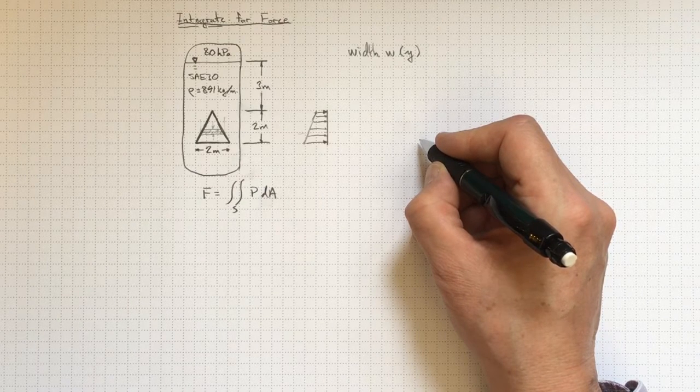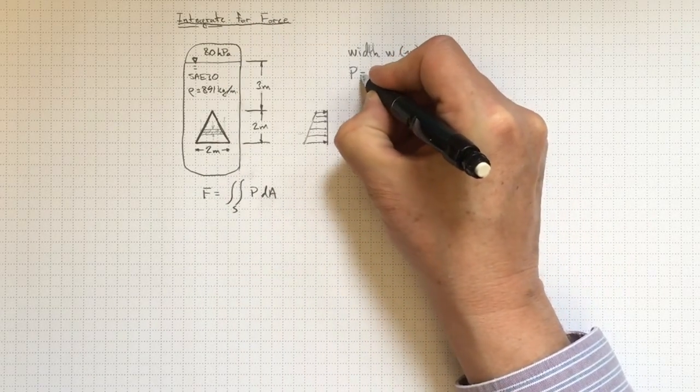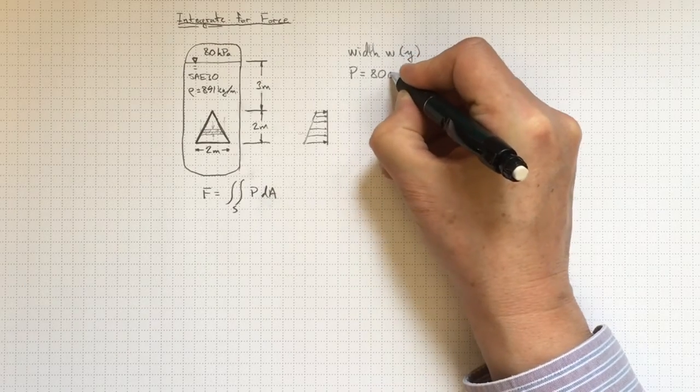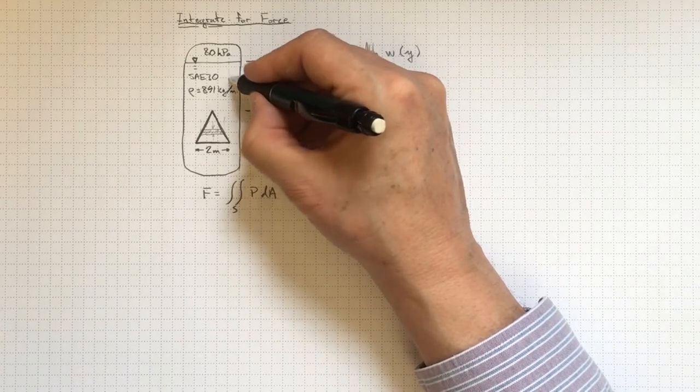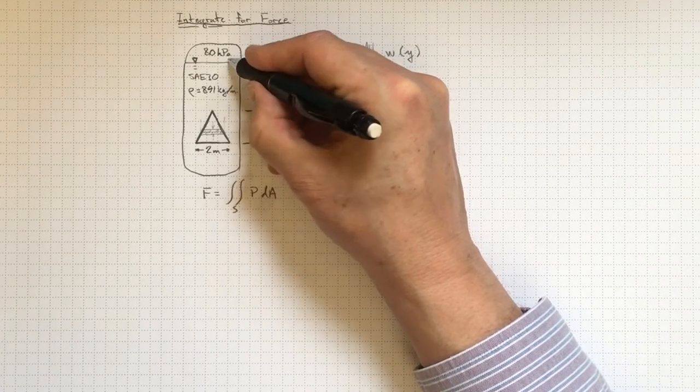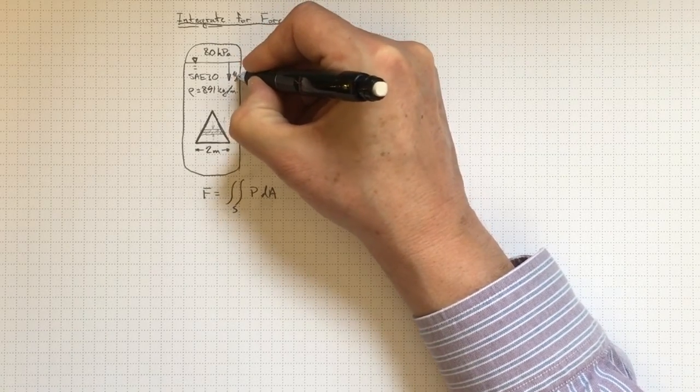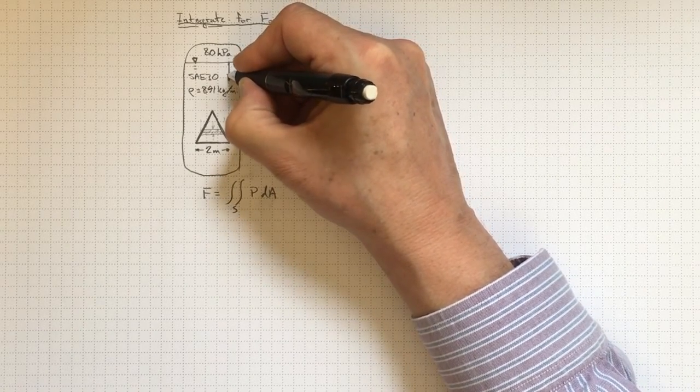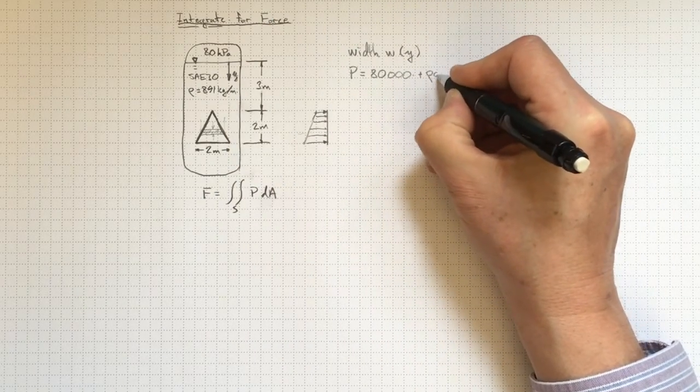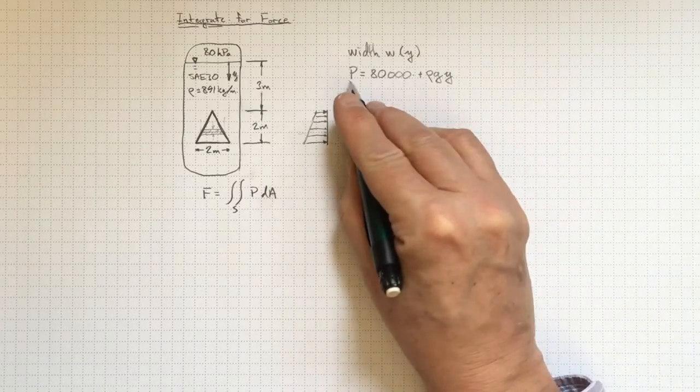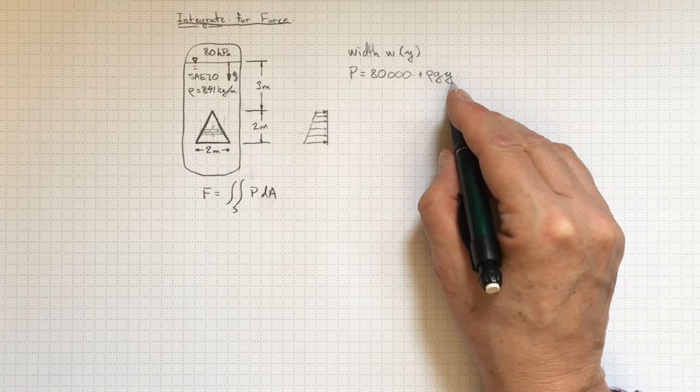Let's choose one that'll make our pressure function fairly easy. So the pressure here is 80 kilopascals, so 80,000 pascals, plus rho g times the depth under the oil surface here. So if I make y start at the oil surface and increase going down, then it's going to be just 80,000 plus rho g times y. So that makes our pressure function as a function of y much simpler than it might be otherwise.